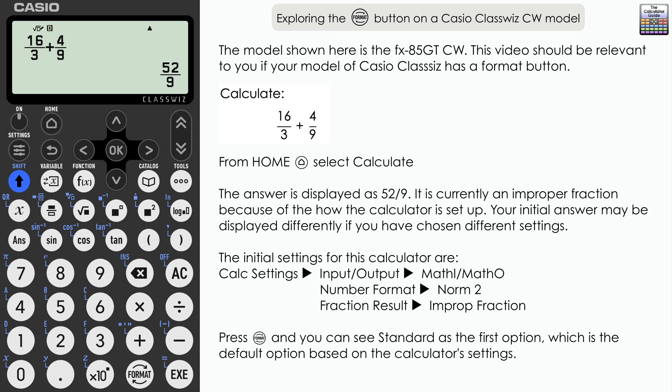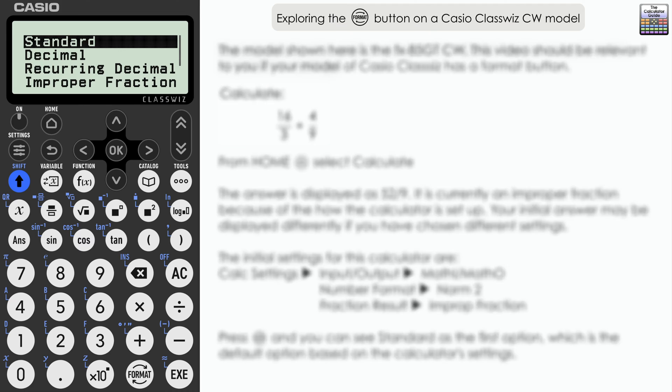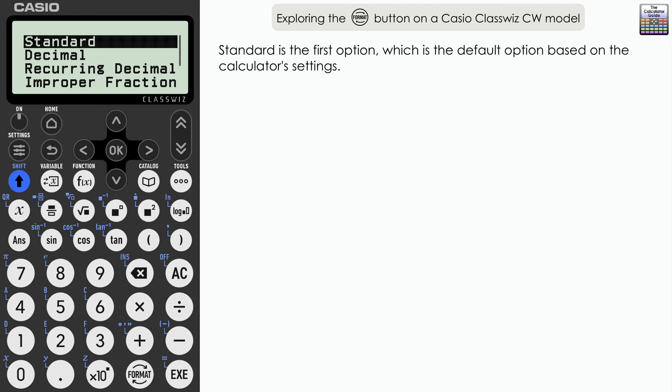Let's see how this is referred to in the format menu. So press the format button. And it's the first option that we have here: standard. So the standard will give what the calculator is set up to present as an answer, according to the settings of your calculator. Now you may have had a decimal initially if you had your calculator set to line output. But if you haven't and you want a decimal, we need to select the second option here.